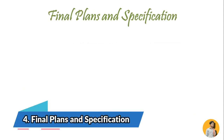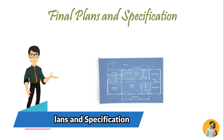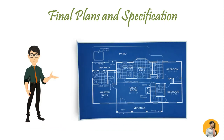Fourth is final plans and specification. Builders and contractors use these to build a house as a blueprint for construction. The final plan includes all details and specifications of the design.